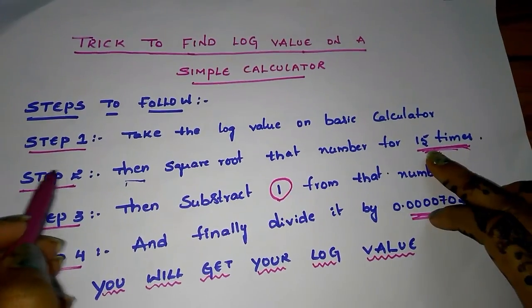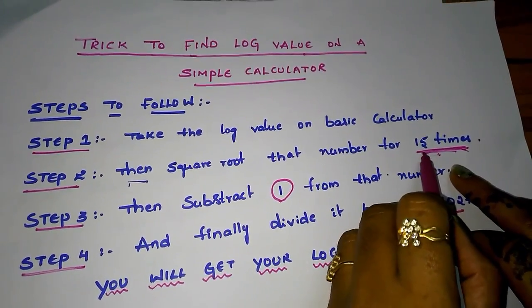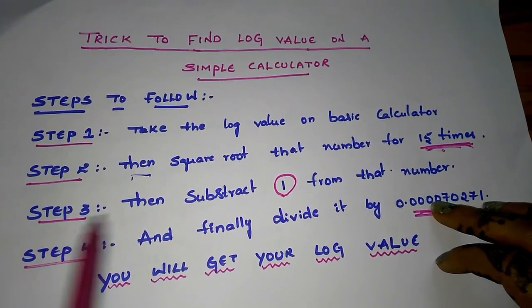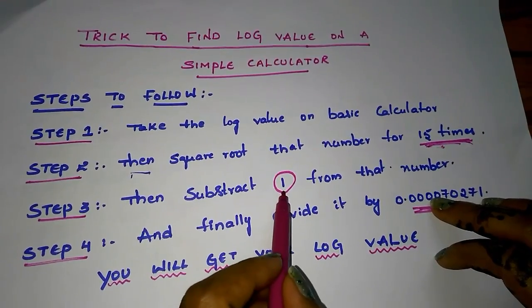Step number 2, square root that number for 15 times. Step number 3, subtract 1 from that number.